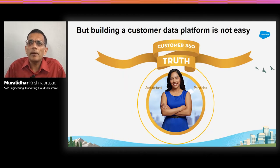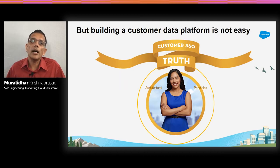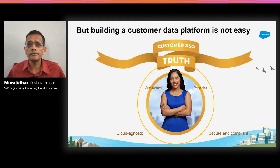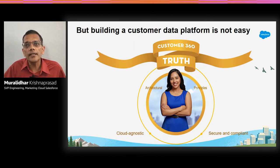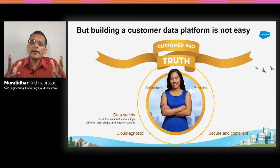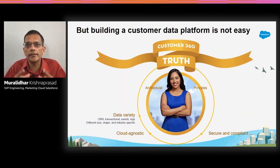Building such a customer data platform is not very easy. It sounds easy — all you need to do is move data, put it in a warehouse and life's great. No, it's not. If you look at the fundamental architectural principles, first, if you are a multi-cloud business, you need to worry about cloud-agnostic models. But more than anything, security and compliance become paramount. This is customer's private data, so it has to be secure by default. And you have to adhere to all of the new privacy rules across the US, Europe, and the rest of the world.